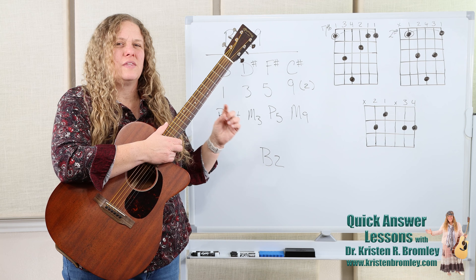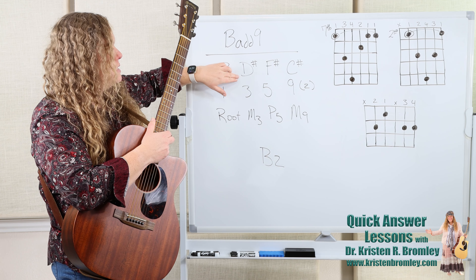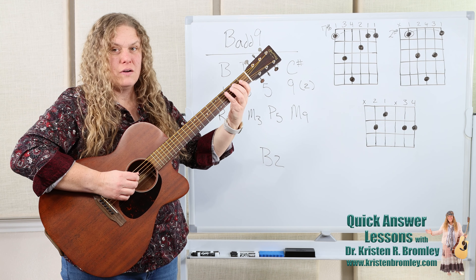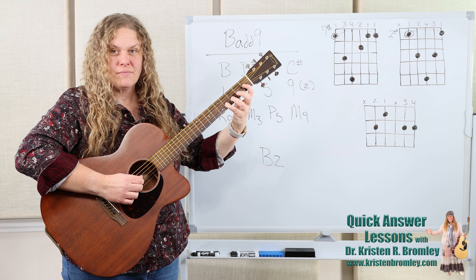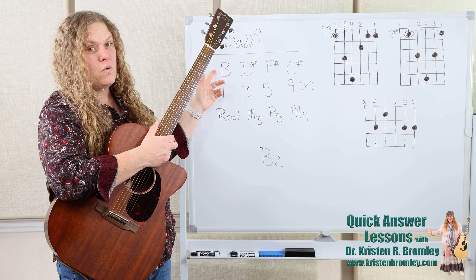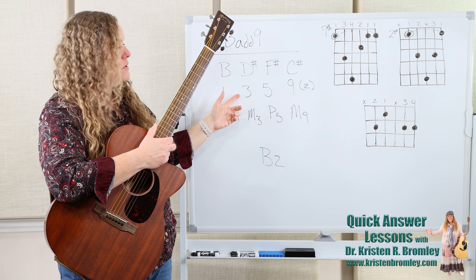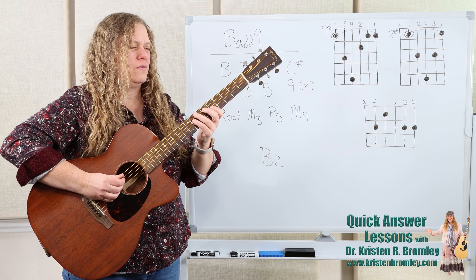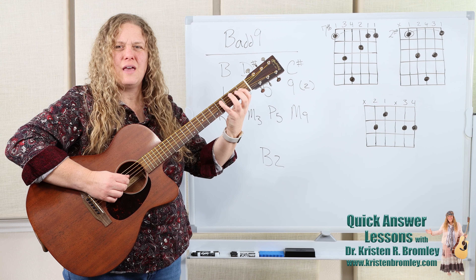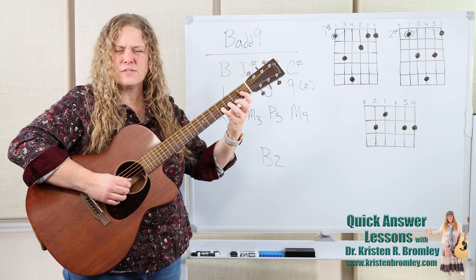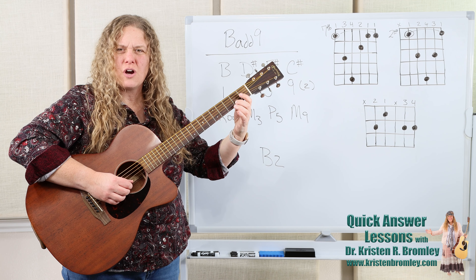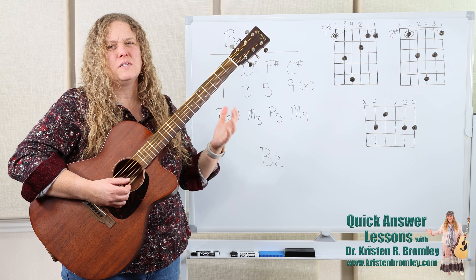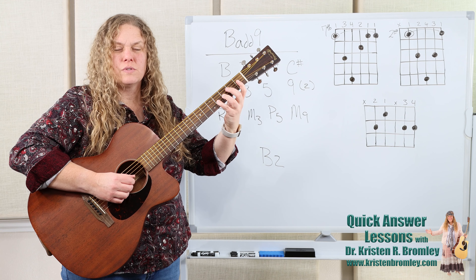B-add-9 is a major chord with a 9th added. It's got the pitches B, D-sharp, F-sharp, and C-sharp. These pitches come right out of the B-major scale. The B is step 1, the D-sharp is step 3, the F-sharp is step 5, and the C-sharp is step 2, but in the higher octave.